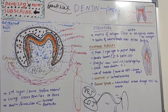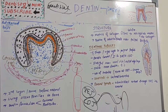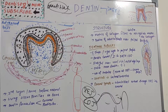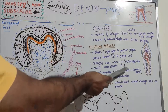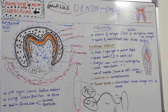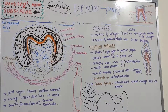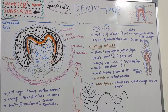The dentinal tubules are almost straight near the root tip and also straight at the incisal edges and cusps. Dentine thickness ranges from 3 to 10 millimeters. The ratio of outer to inner dentine tubules is 5:1. The number of tubules per square millimeter varies from approximately 15,000 at the DEJ to about 65,000 near the pulp surface.